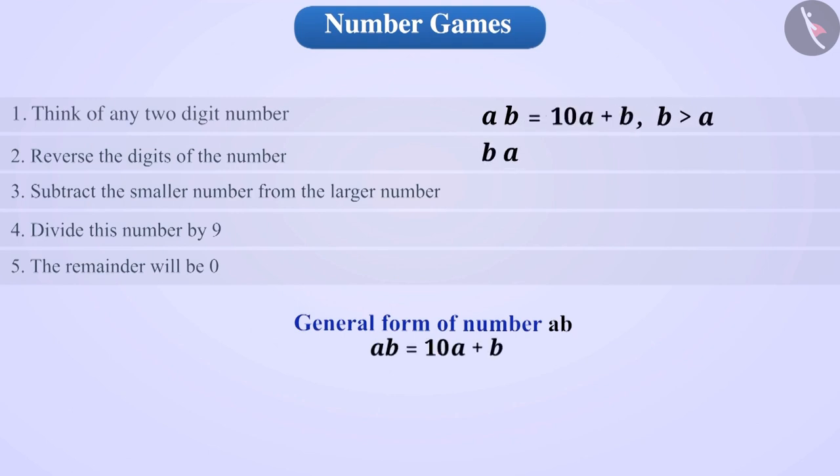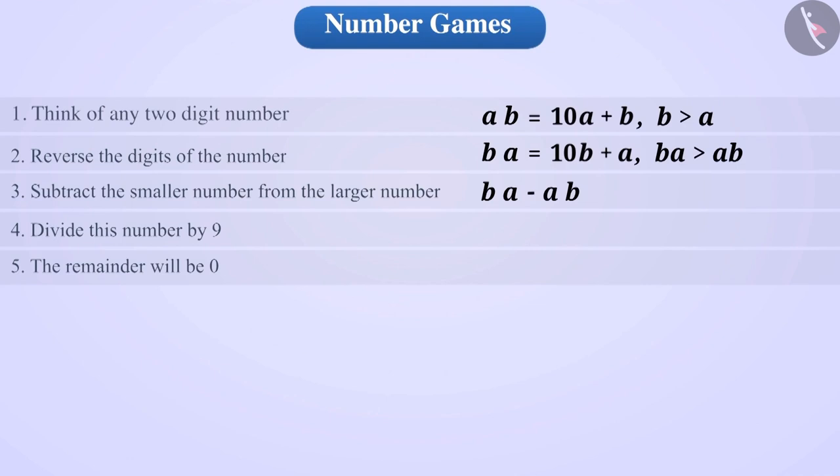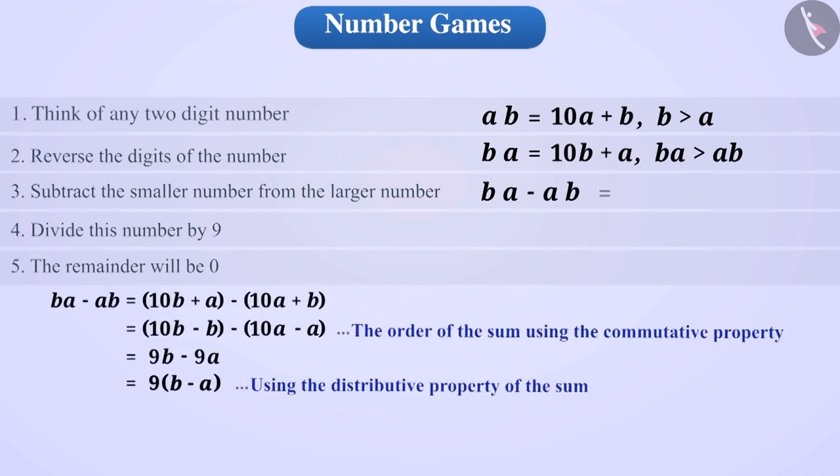The digits will be reversed to get the number BA, which can be written as 10B plus A in general form. Since B is greater than A, we can say that BA is greater than AB. So, let's subtract the smaller number AB from the larger number BA.